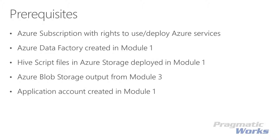Finally, in order to spin up an on-demand HDInsight cluster, we need to make sure we have an application account that has rights to deploy resources to our resource group. We walk through how to create this account with the appropriate rights in lab module 1, as well as how to grab the ID and key we'll need in this lab module.